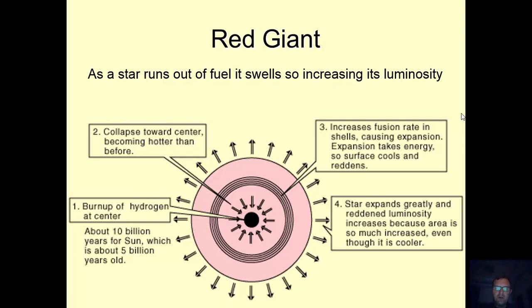When a star runs out of fuel, what it does is it swells, increasing its luminosity. What really happens is that at the center, the hydrogen fuel runs out and that causes an internal collapse of the center. This leads to an increased fusion rate in the wider shells, causing them to expand. This expansion takes energy away, so it cools the surface. It looks more red and the star ends up expanding greatly. So it becomes giant and also reddened in luminosity, but tends to have a much cooler surface temperature. So this is known as a red giant.